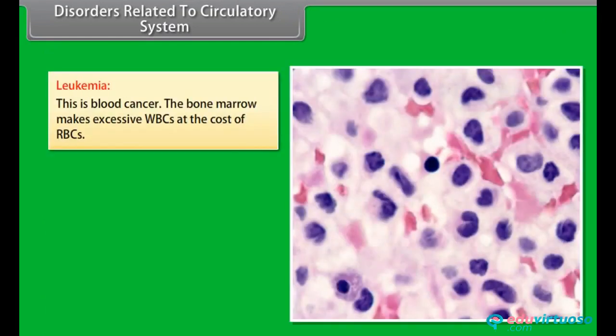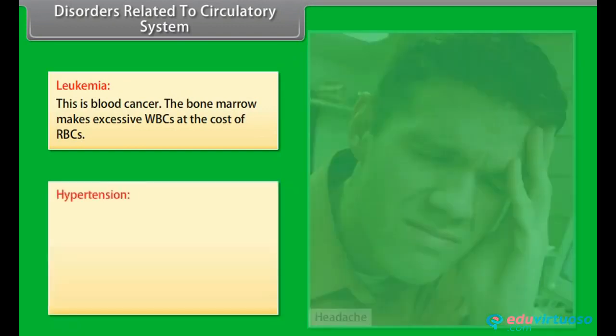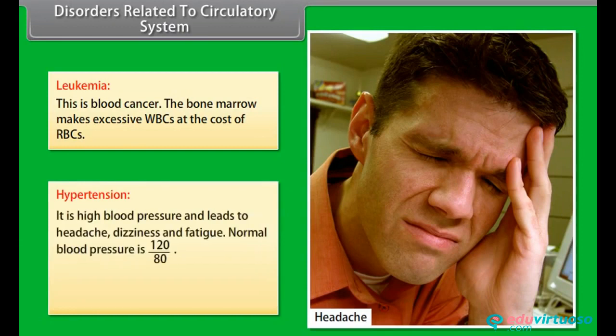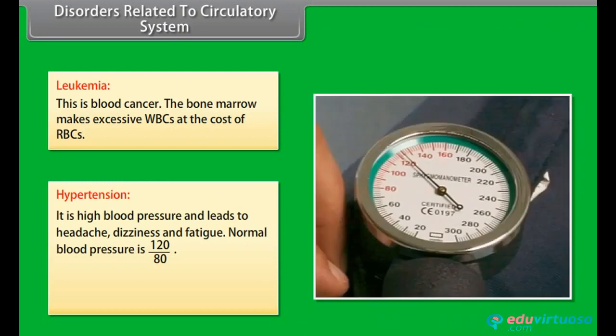Leukemia is blood cancer, in which the bone marrow makes excessive WBCs at the cost of RBCs. Hypertension is high blood pressure and leads to headache, dizziness and fatigue. Normal blood pressure is 120/80. High blood pressure is also caused by anxiety.